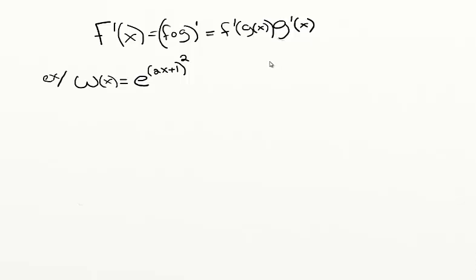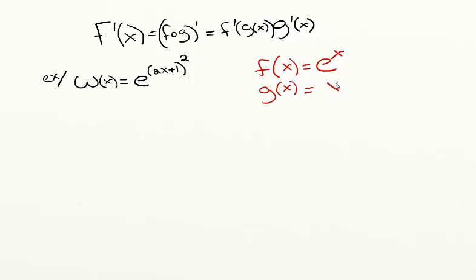Our outermost function we can call f, and f of x is e to something. We're going to call it e to the x, but it's e to the something, and that something is 2x plus 1 squared. That in itself is also a composition of functions, because we have 2x plus 1 inside the square. So our g of x, our next layer, is x squared. First we have e to something, then we have that something squared. Our innermost layer h of x is what that something is, which is 2x plus 1. Now that we have our f, g, and h, we can apply the chain rule — first to f and g, then to g and h.